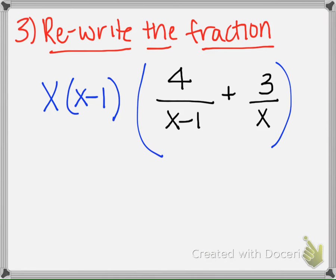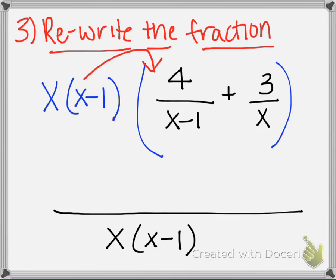Okay, so now the next step is to rewrite each of the fractions. I'm going to take my common denominator, which is x times x minus 1, and I'm going to think about here, if I distribute this right here, this x minus 1 is going to cancel with this x minus 1. But what's left here is we have this x that needs to be multiplied by the 4. So I'm going to have that x that needs to be multiplied by the 4.